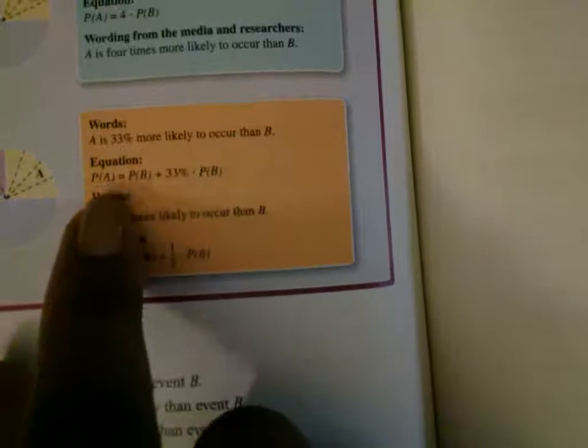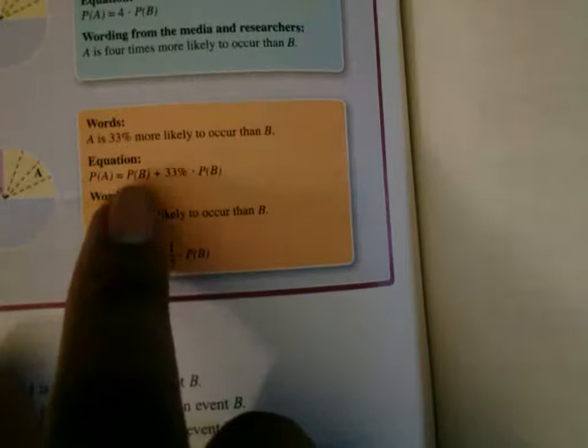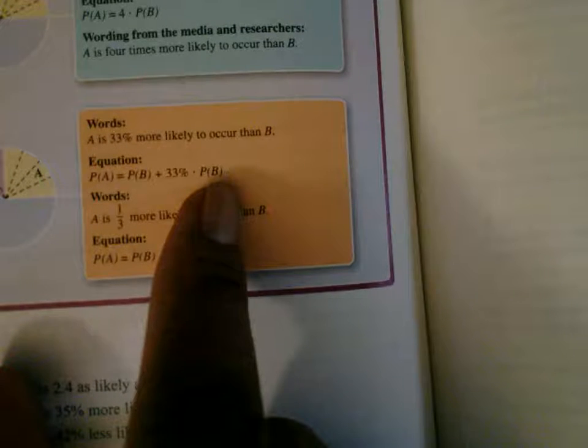If A is 33% more likely to occur than B, then the probability of event A equals the probability of event B plus 33% of whatever the probability of event B is. In words, this is the same as 'A is one-third more likely to occur than B,' and the equation is: probability of event A equals probability of event B plus one-third the probability of event B.